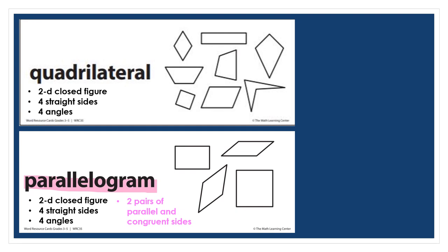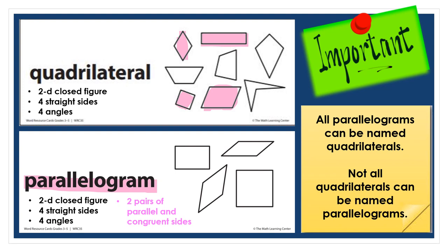They have two pairs of opposite sides that are parallel and congruent or equal in length. Let's look at this group of quadrilaterals on the word recess card at the top of the screen and see if we can spot any examples of parallelograms. Remember, you're looking for quadrilaterals with two pairs of parallel and congruent sides. There are four examples of parallelograms. The quadrilaterals shaded in pink can also be named parallelograms. It's important to note that all parallelograms can be named quadrilaterals, but not all quadrilaterals can be named parallelograms.